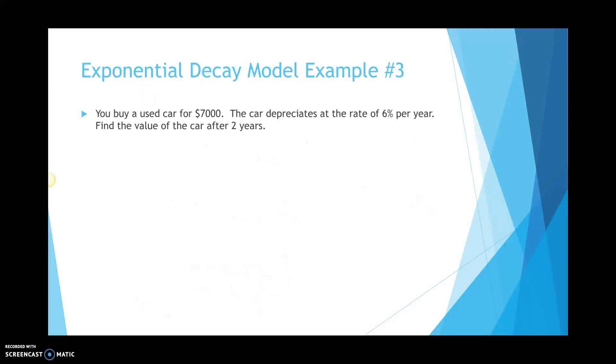Example number three. It says you buy a used car. Another car example here. It says you buy a used car for $7,000. The car depreciates at a rate of 6% per year now. Find the value of the car after two years. Very similarly to the last problem. So, we have y equals c, 1 minus r, raised to the t power. My starting rate is $7,000. And then we're going to have my rate is 6%. 6% becomes 0.06 as a decimal. So, it's 1 minus 0.06 raised to the t power. That's two years.